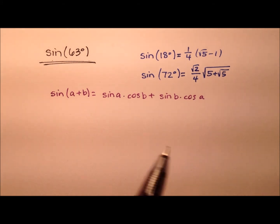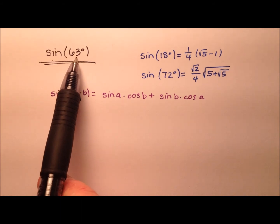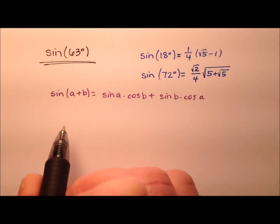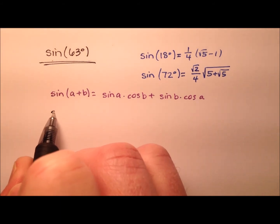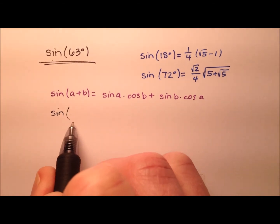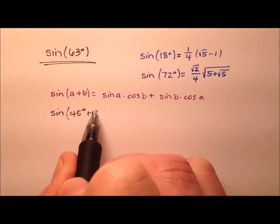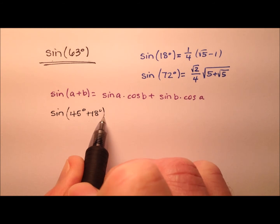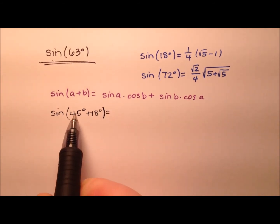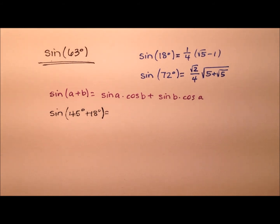So we need a couple of values, a and b, that are nice values to work with and will add up to 63 degrees. We're going to use 45 degrees and 18 degrees, and of course 45 plus 18 does equal 63 degrees.